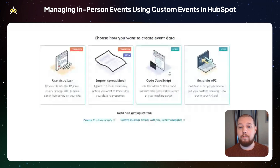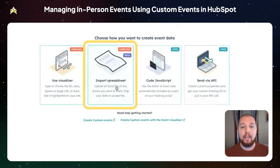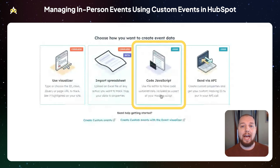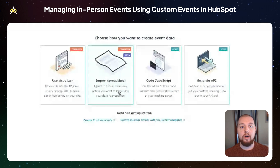When creating a custom event, you're given four options: you can use a visualizer, which allows you to select different elements on your website; you can import a spreadsheet, which is the one we're going to be focusing on first; you can add custom JavaScript to your website or web app; or you can send custom events via API. We're going to focus on importing a spreadsheet.